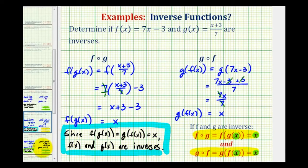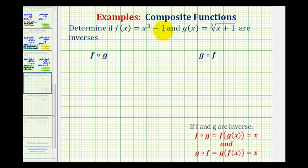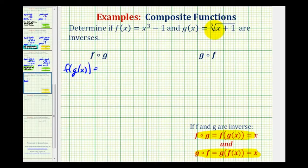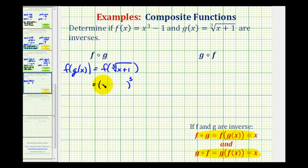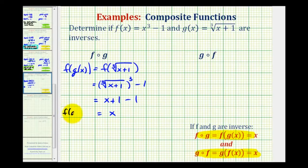Let's take a look at a second example now. Here f of x equals x cubed minus one, and g of x equals the cube root of x plus one. Again, to verify that these are inverse functions, we must show that both composite functions are equal to x. So for f of g, we'll write this as f of g of x. Notice how the inner function is g of x, which is equal to the cube root of the quantity x plus one. So we'll have f of the cube root of the quantity x plus one. So all this becomes the input into function f, where f of x is equal to x cubed minus one. So we're going to cube the input of the cube root of x plus one, and then subtract one. Well, if we cube a cube root, these will undo each other, leaving us with the radicand of x plus one. x plus one minus one is equal to x. So the first composite function is equal to x.